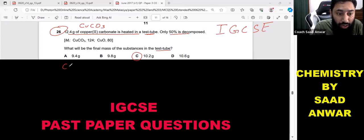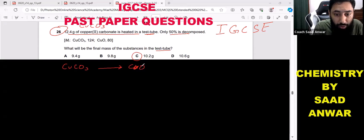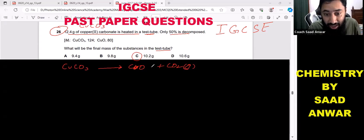So guys, when I decompose copper carbonate by heating, it will convert into copper oxide and carbon dioxide. Carbon dioxide is a gas so it will not stay there. Copper oxide is a solid, copper carbonate is a solid.